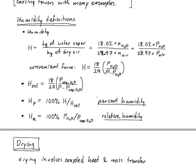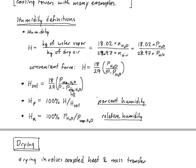For a handy reference, there are several humidity definitions: humidity is the amount of water vapor over dry air, expressed as (18/29) × P_vap / (P − P_vap). Saturated humidity is (18/29) × P_vap_sat / (P − P_vap_sat). Percent humidity is the actual humidity divided by saturated humidity times 100%, and relative humidity is the partial pressure of water divided by its vapor pressure times 100%.